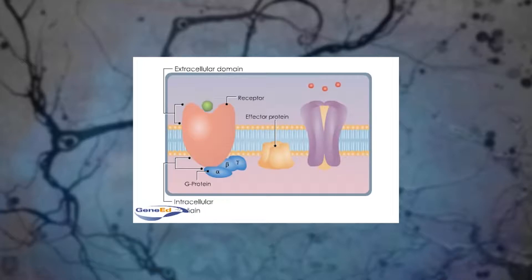Metabotropic receptors, in contrast, don't typically directly open a tiny hole in the membrane, but rather trigger secondary signaling cascades inside the postsynaptic neuron that have relatively delayed downstream effects, including sometimes the opening of other receptors.